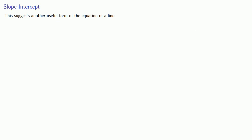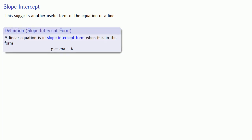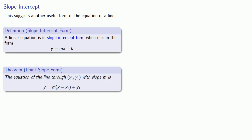This suggests there's another useful form of the equation of the line, known as the slope-intercept form. We say that a linear equation is in slope-intercept form when it is in the form y equals mx plus b. It's worth comparing this to our equation in point-slope form. The advantage to point-slope form is that as soon as you have a point on the line and a slope, you can write down the equation of the line immediately.